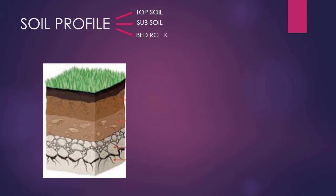Each layer has its own characteristics. In this picture, these layers have been named A, B and C. A is the topsoil. It is the uppermost layer of soil and contains fine particles of sand, clay, and humus.